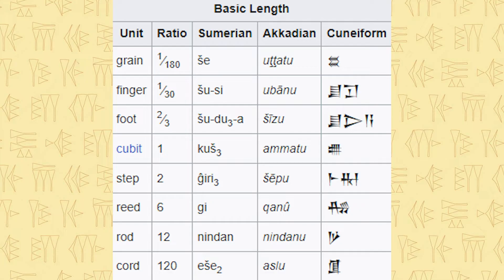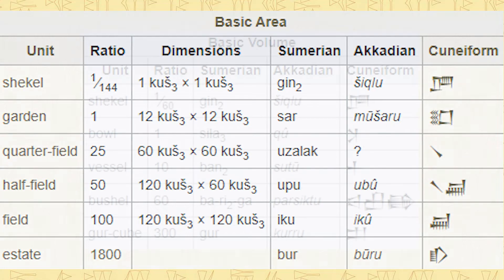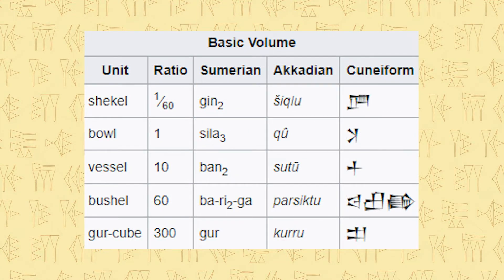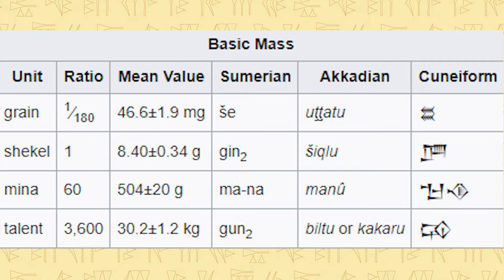For area, the basic unit was a garden, or sa, measuring about 12 by 12 kush. A bur, or estate, is a large unit of area of 1800 gardens. Volume units were used to measure dry capacities, like for grain, or wet ones, like beer. The bowl, or sila, was the basic unit and measured around a liter. 60 of these made a bariga, and 300 sila was a ger — the capacity of the ger cube. The basic unit of mass was the shekel, or gin, measuring around 500 grams, while one mana is 60 gin.